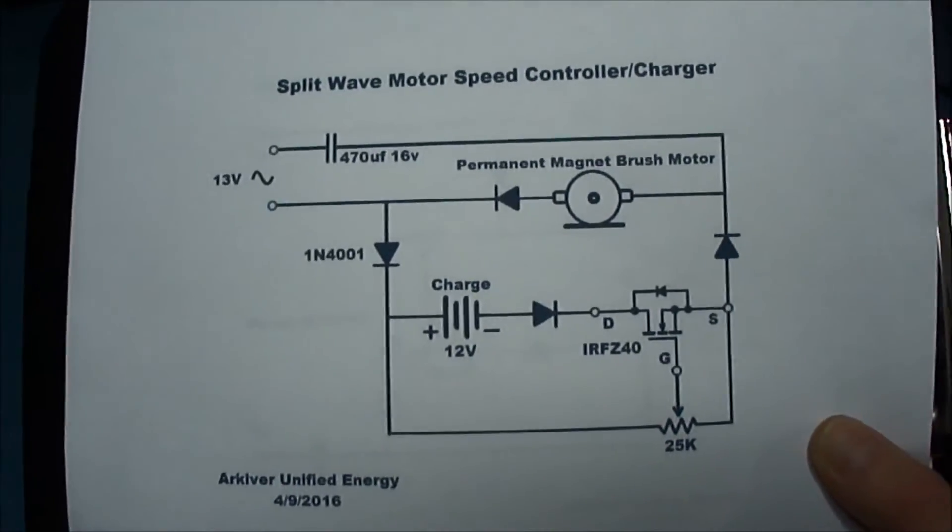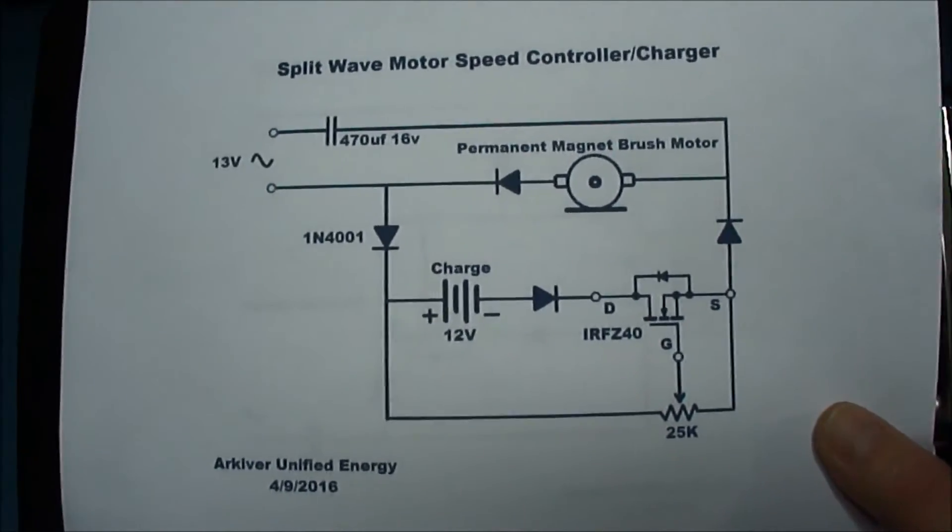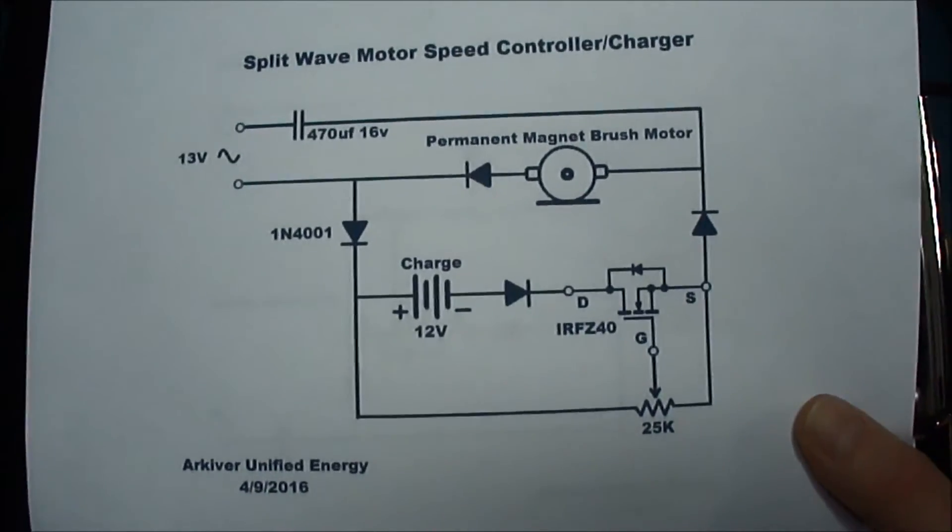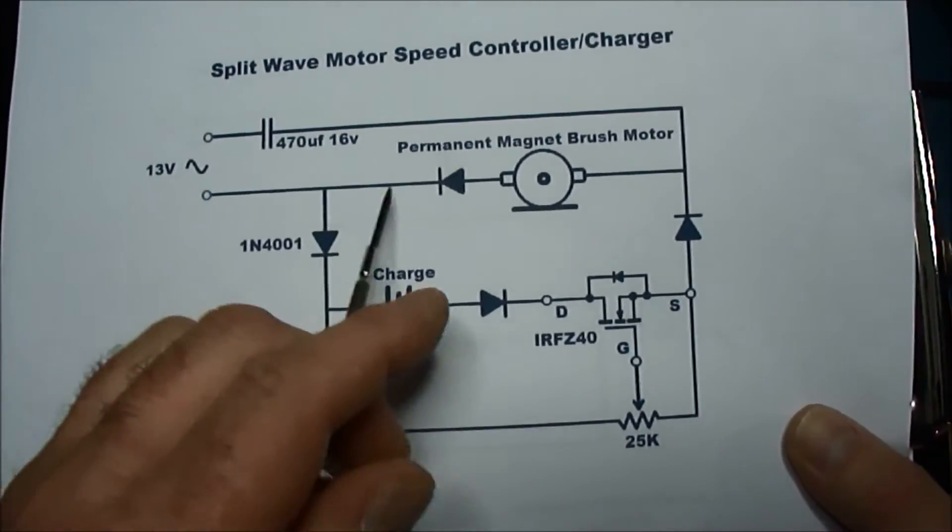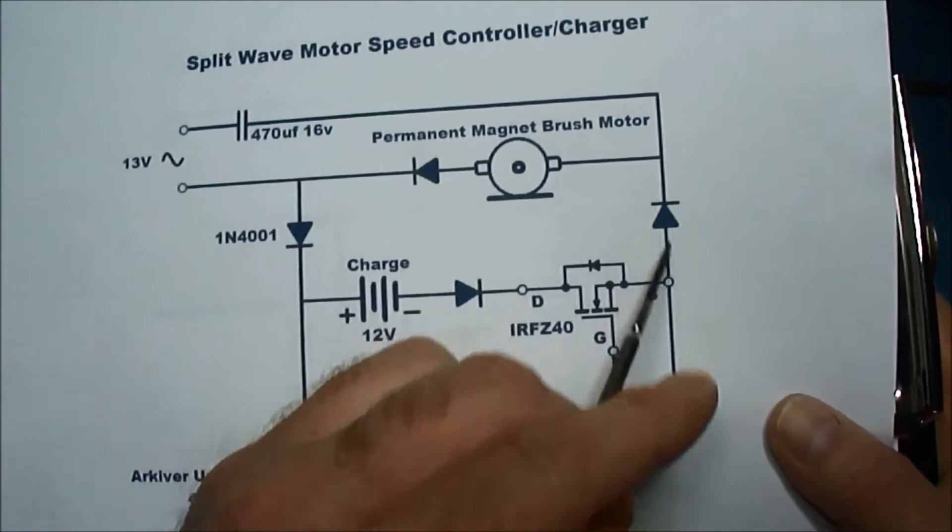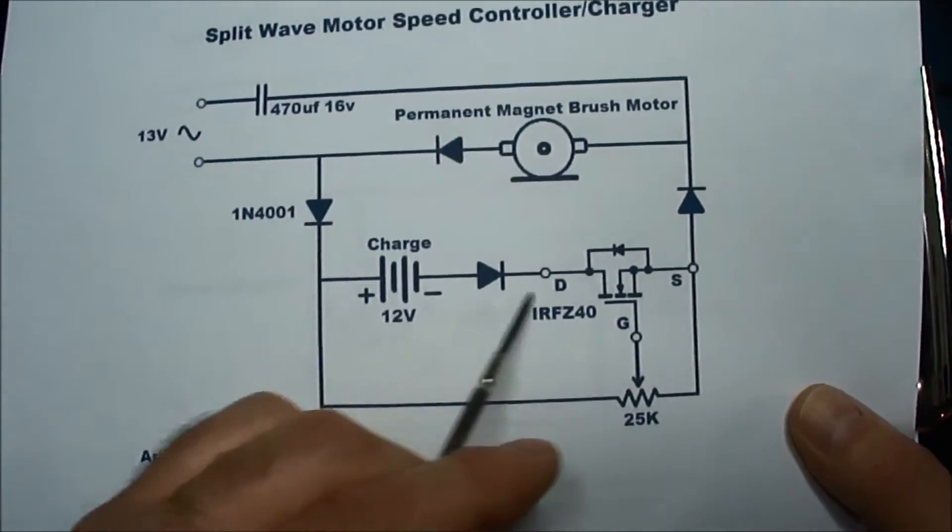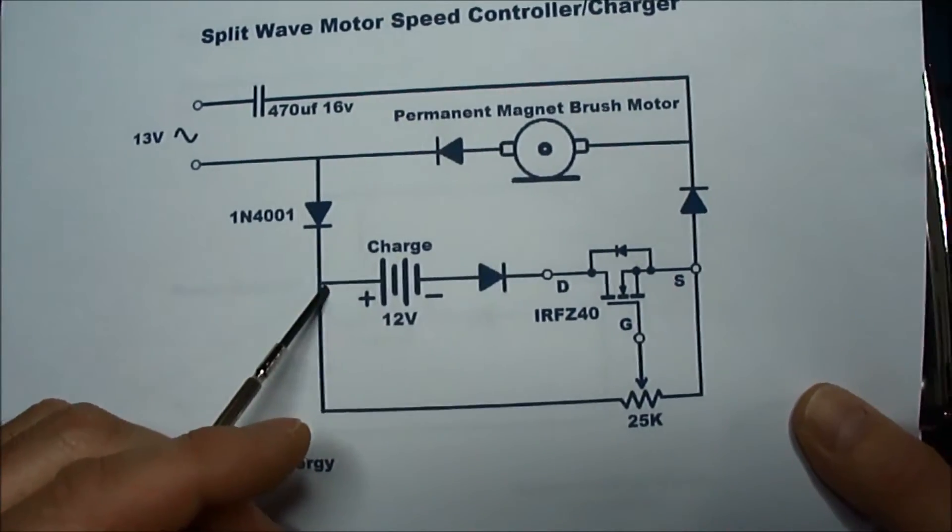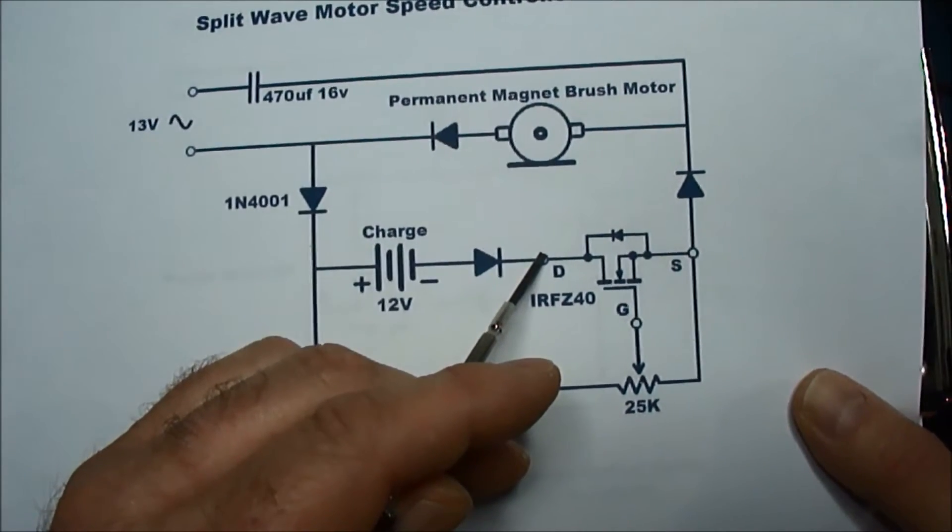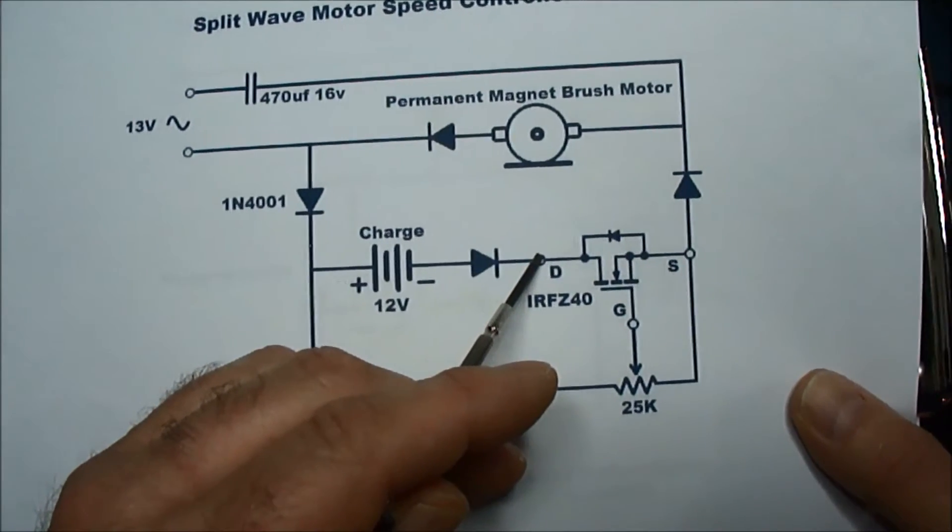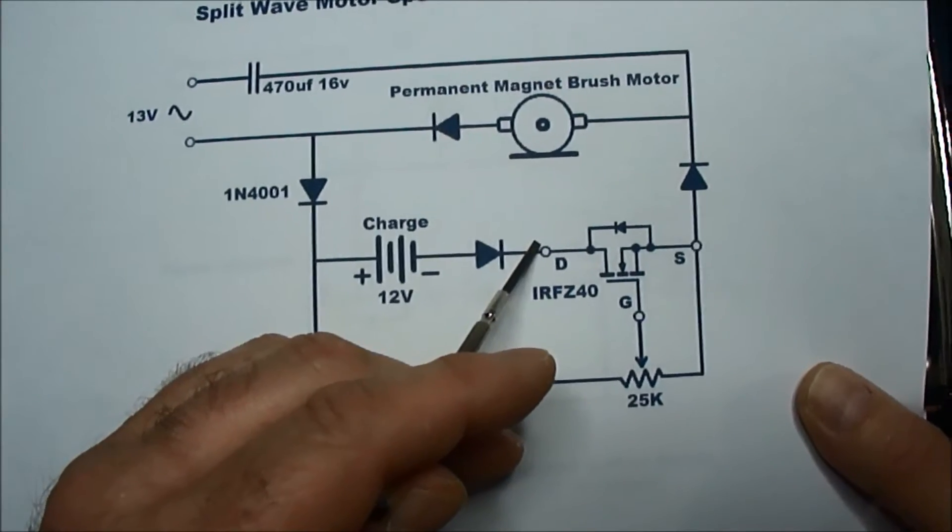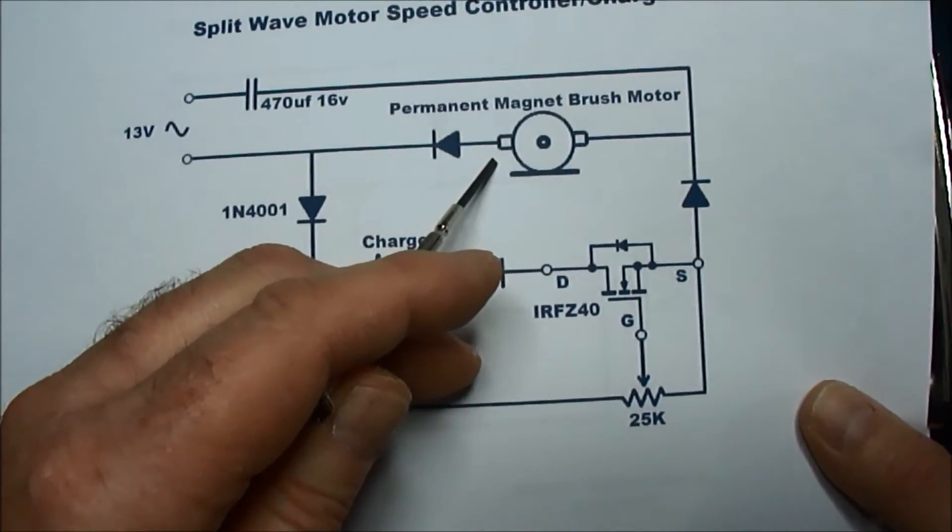This is the split wave speed controller circuit from my last video where one half of the AC wave goes through the motor and the other half goes back through the charge battery. When you control one half of the AC wave and restrict the flow, it automatically restricts the flow in the other half.